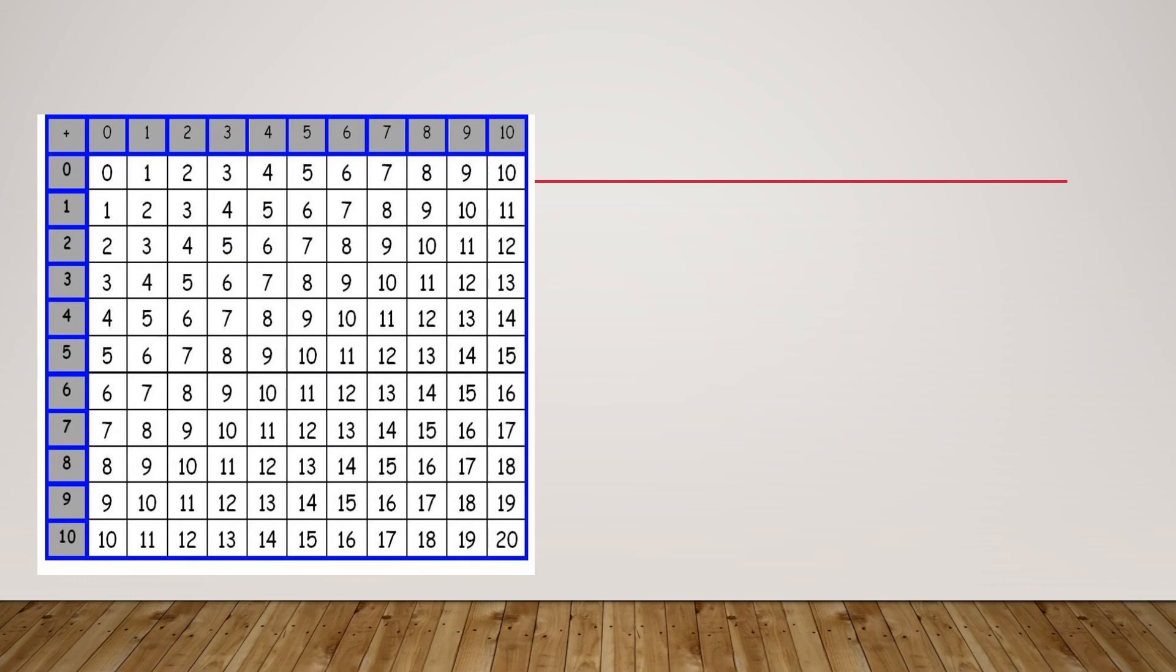So now let's look at patterns with even and odd numbers. We're going to start with 2 plus 6. 2 plus 6 equals 8. 2 is an even number and 6 is an even number. And it equals an even number, which is 8. So even plus even equals even. And that would be true for any even plus even numbers.